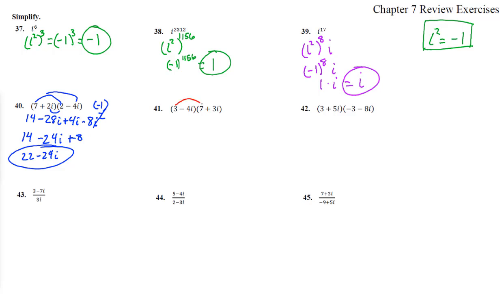Number 41. Binomial again. So we get 21 plus 9i minus 28i minus 12i squared. So this is 21 minus 19i.